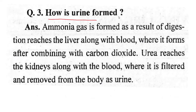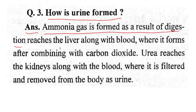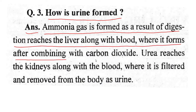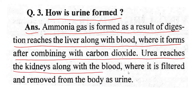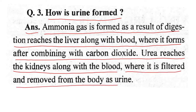Question three: How is urea formed? Ammonia gas is formed as a result of digestion of proteins. It reaches the liver along with the blood, where it combines with carbon dioxide to form urea. Urea then reaches the kidneys along with the blood, where it is filtered and removed from the body as urine.